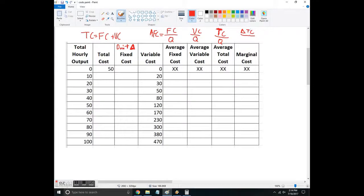Average total cost is the total cost number over the quantity. Marginal cost is the change in total cost over the change in quantity. So that's going to be important here. Here I've gone up by tens, so it's always going to be, in this example, whatever the change in total cost is over 10.